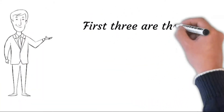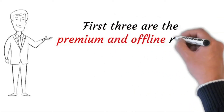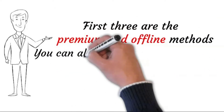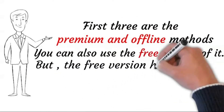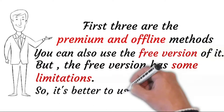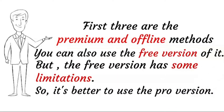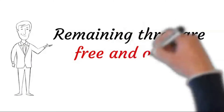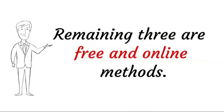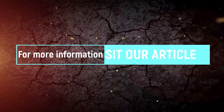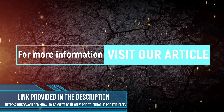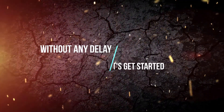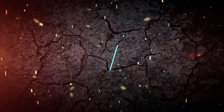The first 3 methods are premium and offline methods. You can also use the free version, but the free version has some limitations, so it's better to use the pro version. The remaining 3 are free and online methods. For more information, visit our article — link provided in the description. Without any delay, let's get started.